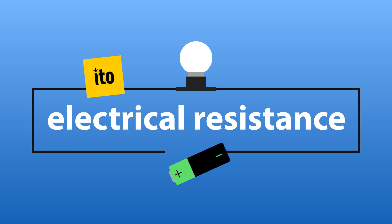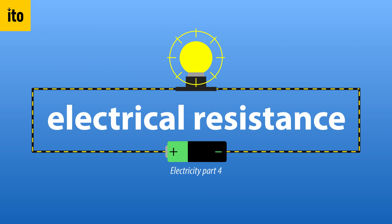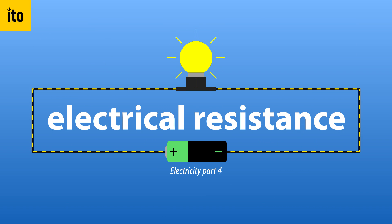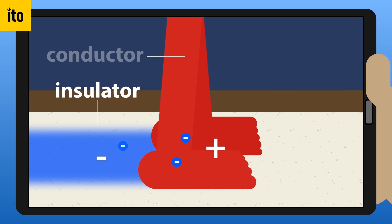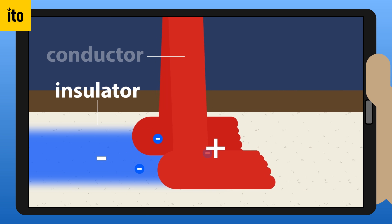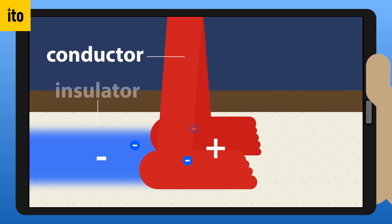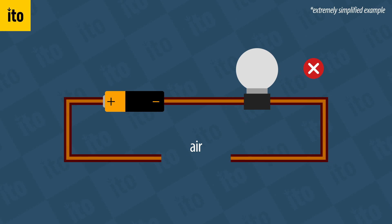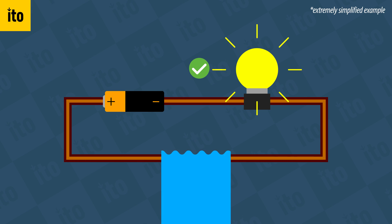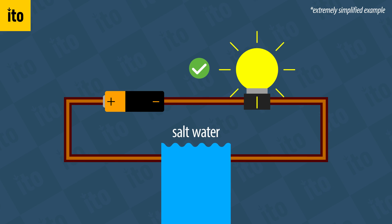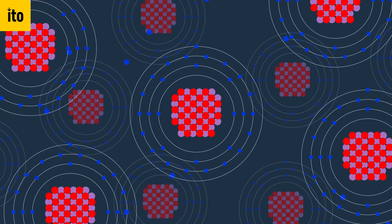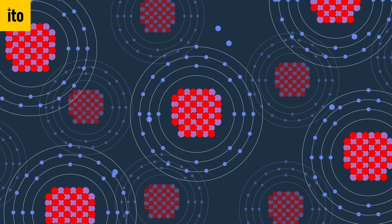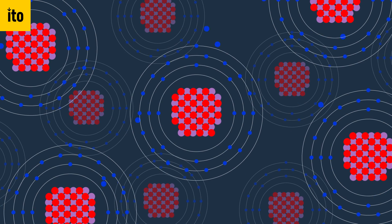What is electrical resistance? We already touched on this subject in the first video in this series, when we mentioned insulators and conductors. Materials impede the flow of electrical current in various ways, depending on their properties. In general, this is down to the available freedom electrons have to move within the material.